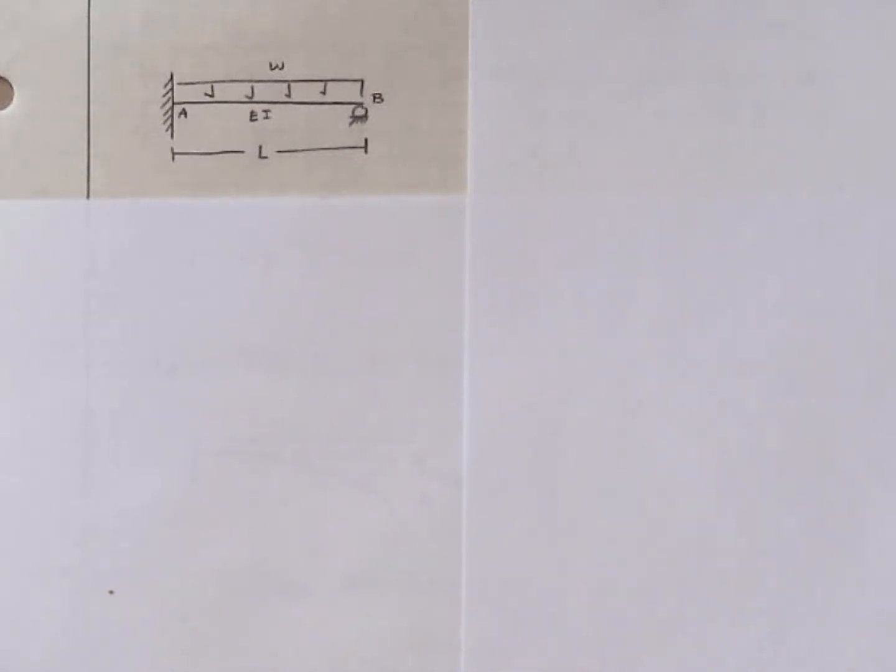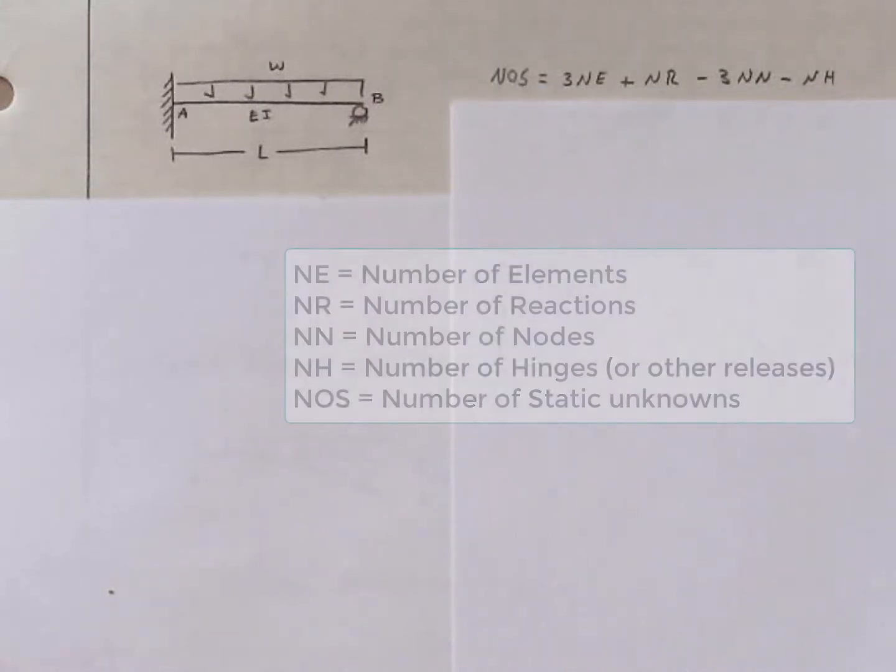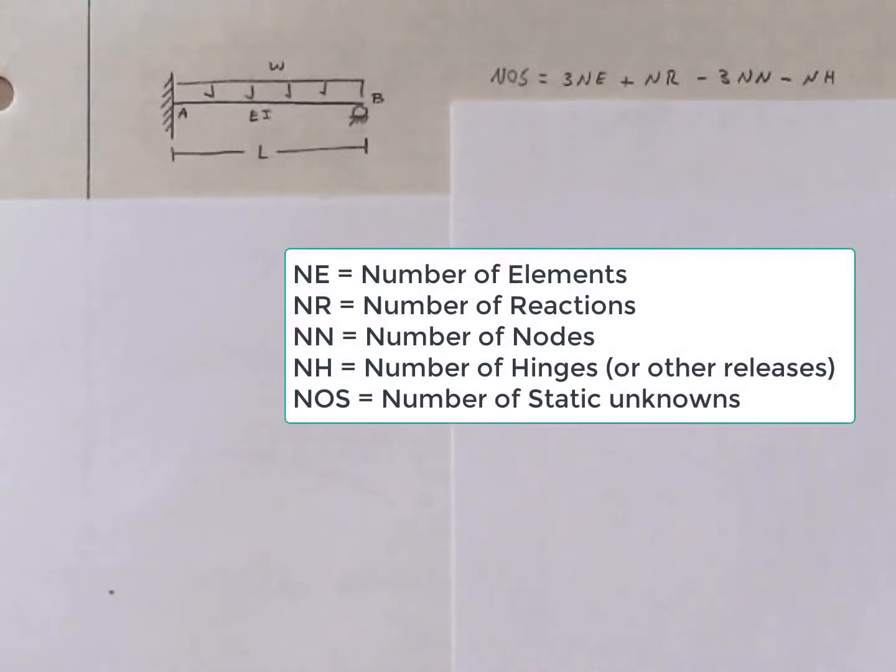We'll start by determining the degree of indeterminacy using our equation for NOS. NOS is three times the number of elements plus the number of reactions minus three times the number of nodes minus the number of hinges or other releases. NOS stands for the number of static unknowns.